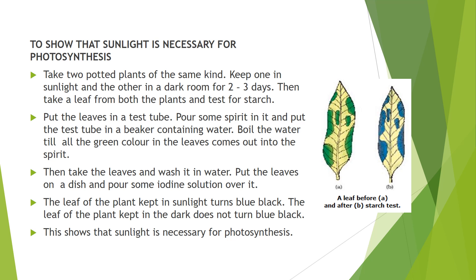We will continue heating until all the green color of the leaf comes out. Then we will take the leaf out, wash it with water, and perform the starch test by putting iodine solution on both leaves. We will observe that the leaf kept in sunlight will turn blue-black in color, and the leaf kept in the dark room will not turn blue-black because no photosynthesis took place — no photosynthesis, no starch formation, so no blue-black color. The plant in sunlight performed photosynthesis, starch was formed, so it gives blue-black color. This activity shows that sunlight is very necessary for photosynthesis.